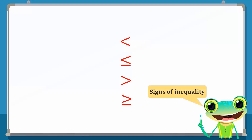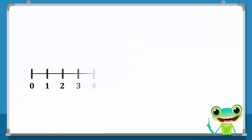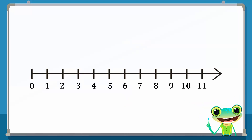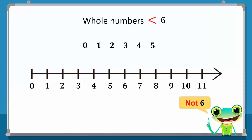Remember that all these symbols are called signs of inequalities. Now, let's relate these symbols with the number line. Number lines are visual ways of representing ordered numbers. Let us represent whole numbers less than 6 on a number line. Whole numbers less than 6 means 0, 1, 2, 3, 4 and 5, but not 6. We can represent these numbers on the number line by highlighting through dots or by circling the selected numbers.